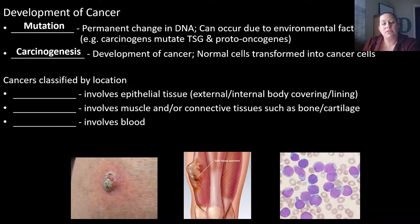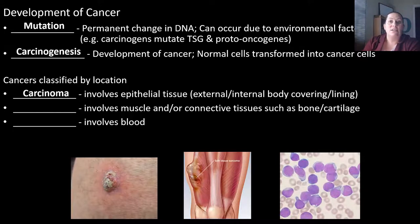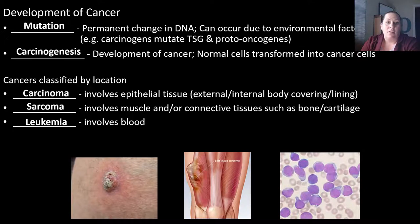Cancers are classified based on their location. If the epithelial tissue is involved — external and internal body coverings and linings — we call these carcinomas, so skin cancers are carcinomas. If the cancer involves muscles or connective tissue such as bone or cartilage, we call them sarcomas — like osteosarcoma, which is a bone cancer. If the cancer involves the blood, we call it leukemia. These different names reflect where the cancer originated, what kind of tissue or cells it came from in the body.